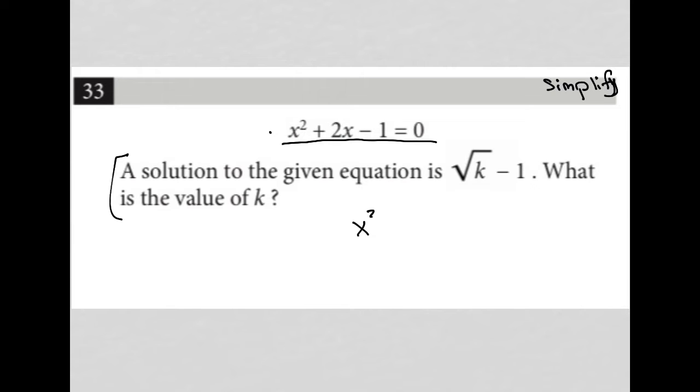I am going to start off with just simplifying this, if I can, equals 0. The quadratic formula here is probably the best way to go about this, so x equals negative b plus or minus the square root of b squared minus 4ac, all over 2a.